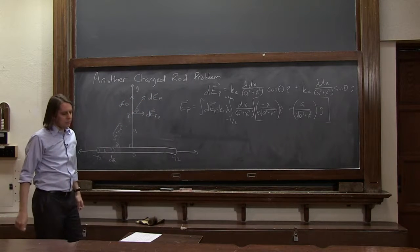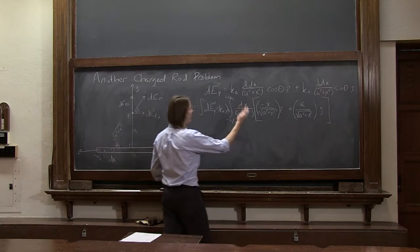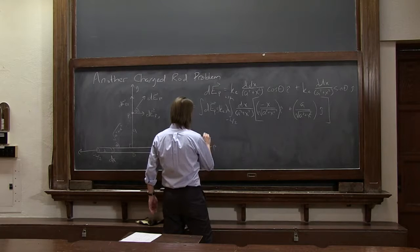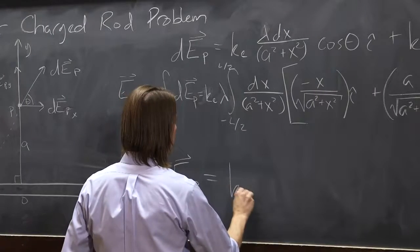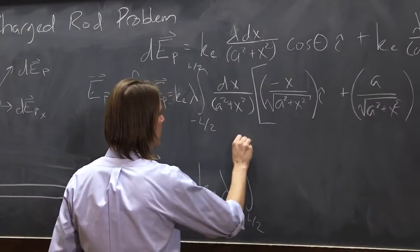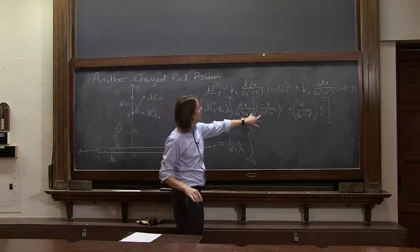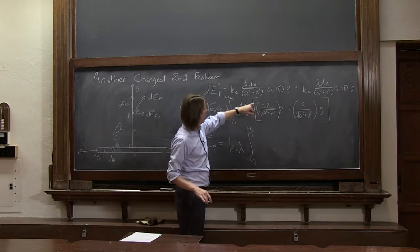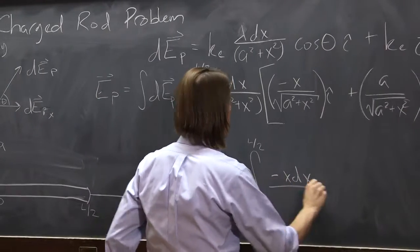So now we have everything in terms of x. So we can kind of simplify it a little bit and say now our EP that we care about is equal to ke lambda times the integral from minus l over 2 to l over 2 of, and now we're going to combine these. This term, first term,